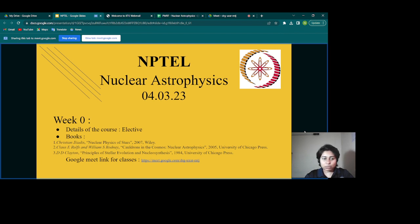Let us discuss the details of this course. This is an elective course, and the recommended books are given in this slide. Many of you have already started asking about books. First is Nuclear Physics of Stars by Christian Iliadis, second is Quarks in the Cosmos: Nuclear Astrophysics, and third is Principles of Stellar Evolution and Nuclear Synthesis by D.D. Clayton.